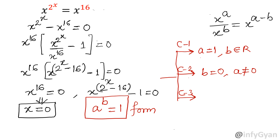Case 3: your base is negative 1, so a is equal to negative 1, and at the same time b should be even. If this holds true then minus 1 raised to the power even gives us 1, which is our right-hand side. So there are three cases of the a raised to the power b equal to 1 form. We have to check all three cases. So there will be in total three or four solutions possible.